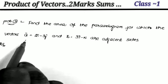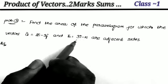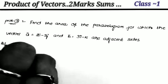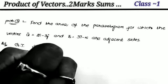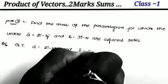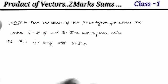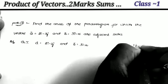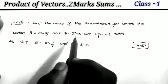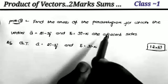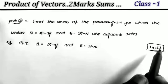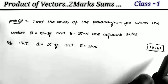Next problem: find the area of the parallelogram for which the vectors a = 2i minus 3j and b = 3i minus k are the adjacent sides. The two adjacent sides are given. The formula for area of a parallelogram when adjacent sides are given is the modulus of a cross b. If the vectors were diagonals, we would use one-half times modulus of a cross b, but here they are adjacent sides.